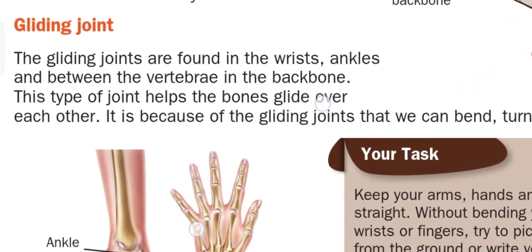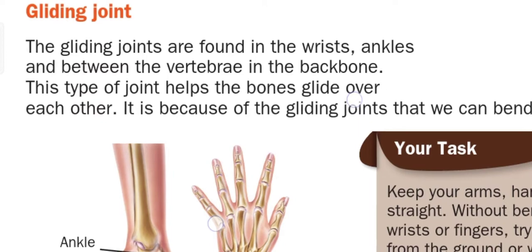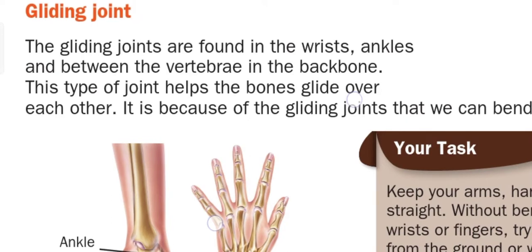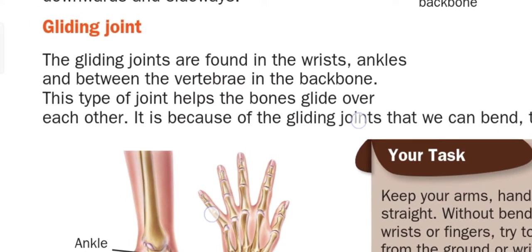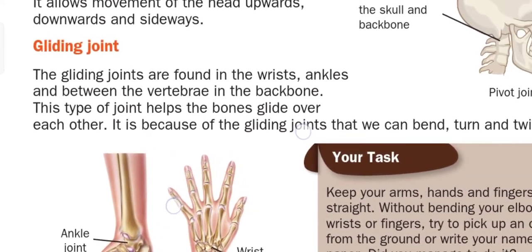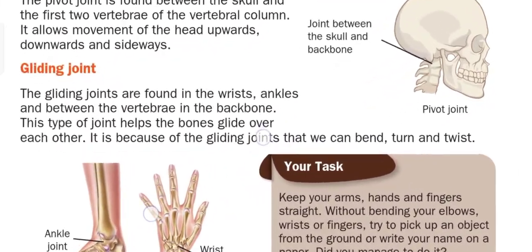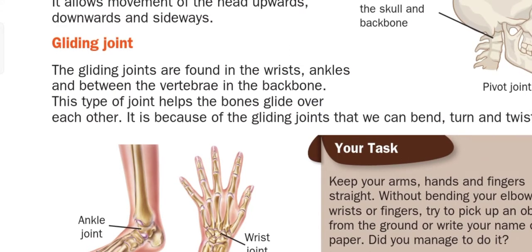Then we have gliding joints. In a gliding joint, one bone glides over another. Gliding joints are found in the wrists, ankles, and between the vertebrae in the backbone. This type of joint helps bones glide over each other, allowing us to bend, turn, and twist.